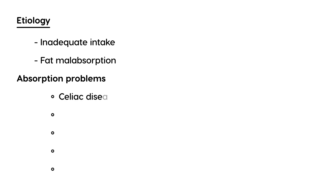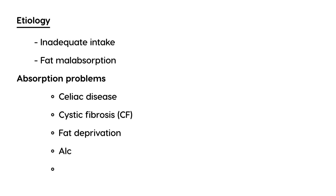For example: celiac disease, cystic fibrosis, any kind of fat deprivation state — because fat is needed to absorb vitamin A since it's a fat-soluble vitamin. Alcoholism can also interfere with absorption, as can liver diseases. Keep those in mind on clinical vignettes, where a patient may have one of these absorption problems and that's why they're developing the deficiency.